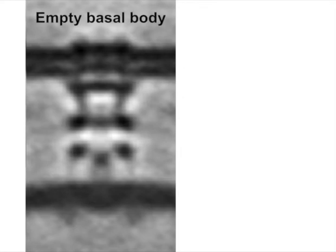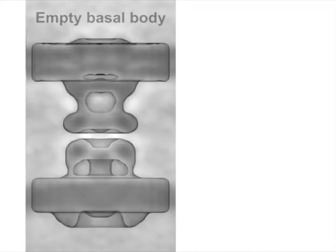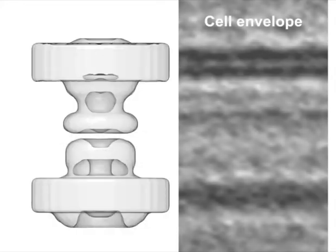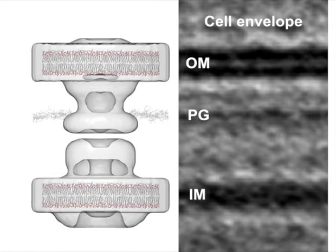Subtomogram averaging revealed the shape of the empty basal body in three dimensions. To discover where the peptidoglycan layer intersects the structure, we averaged random sub-volumes around the cell containing the outer membrane, peptidoglycan, and inner membrane.